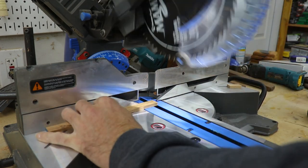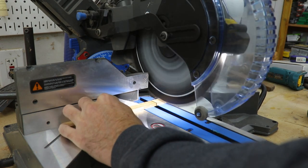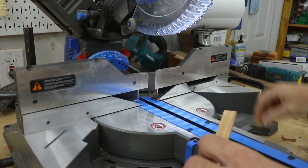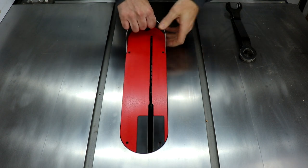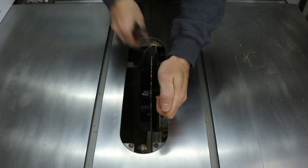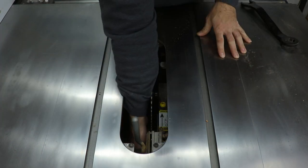Then over at the miter saw I cut about a two inch piece off of each strip. Then I switch from a regular blade over to my dado stack, and like I said this one's going to be a quarter inch wide so I just need the two outside blades.